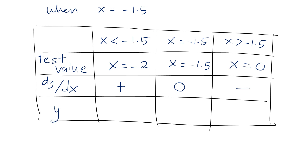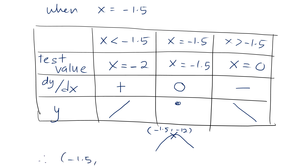When dy over dx is a positive number, the value of y is increasing. When dy over dx is equal to 0, the value of y is constant. When dy over dx is a negative number, the value of y is decreasing. So we have a maximum point, and (negative 1.5, negative 12) is a maximum point.